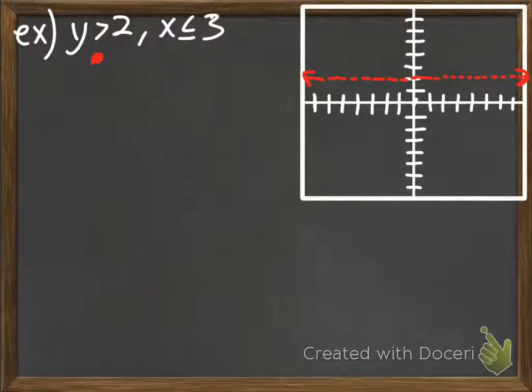So we're going to pick (0,0) to test. And we see that 0, is 0 greater than 2? It's false. So we shade the other side. So we're going to be shading up here.